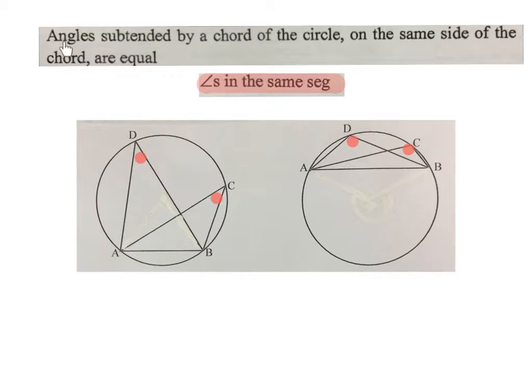The theorem states angles subtended by a chord of a circle on the same side of the chord are equal. In other words, this angle and this angle are sitting on this chord. They are subtended by this chord and they will be equal.